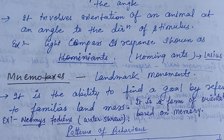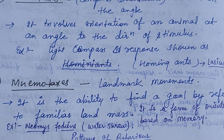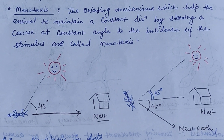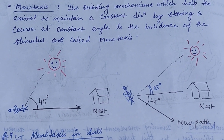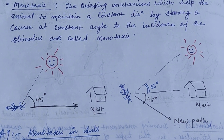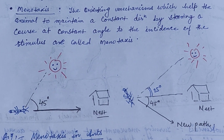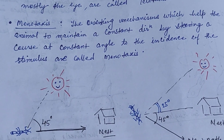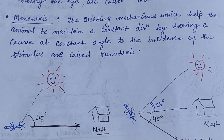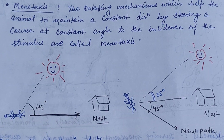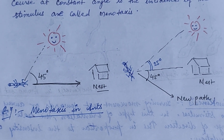Mnemotaxis is a landmark movement — it is the ability to find a goal by referring to familiar landmarks. It is a form of orientation based on memory. Example: Neomaes fordeans, commonly known as the water stream. The last one is menotaxis — the orienting mechanism that helps an animal maintain a constant direction by steering a course at a constant angle to the incidence of the stimulus. The difference: mnemotaxis is landmark-based and relies on memory, while menotaxis is an orienting mechanism based on angle. Here is a figure of menotaxis in ants.